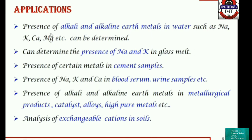Looking at the applications of flame photometry: it is mainly used to determine alkali and alkaline earth metals. It can be used for water samples, to determine sodium and potassium in glass melt, for metals in cement samples, and for the presence of sodium, potassium, and calcium in blood serum and urine samples — so it has biological applications as well. It is also used to determine alkali and alkaline earth metals in metallurgical products, catalysts, alloys, and high-purity metals.